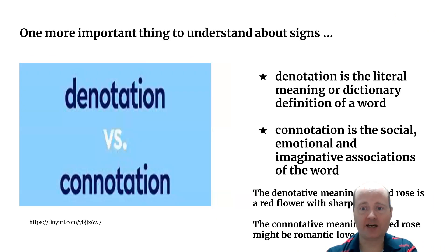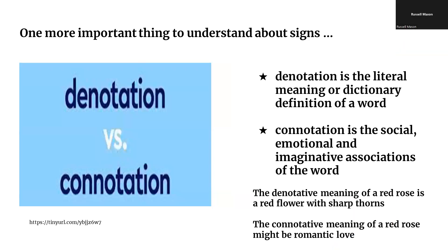Let's look at denotation and connotation. Denotation is the dictionary definition of a word. Connotation is the social, emotional, and imaginative meaning or association the word has. For example, the denotative meaning of a red rose is a red flower with sharp thorns. The connotative meaning — especially in Western cultures — is romantic love.